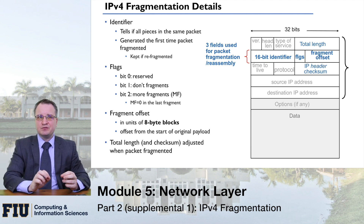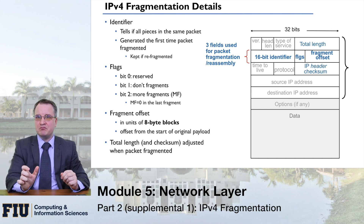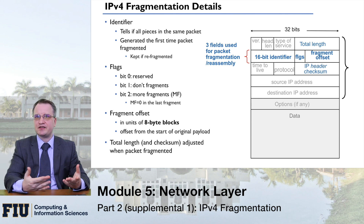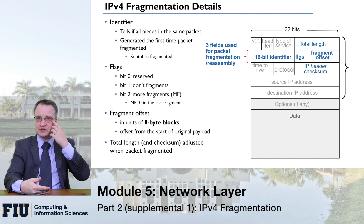The fragment offset field is a little more complex because it doesn't designate the number of bytes directly, but rather in 8-byte blocks. So it involves a little bit of calculation. You have to properly calculate this offset since the first packet in the sequence.